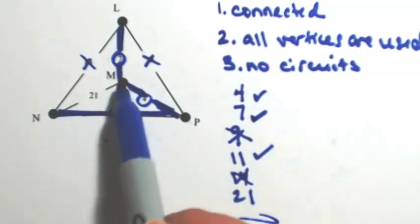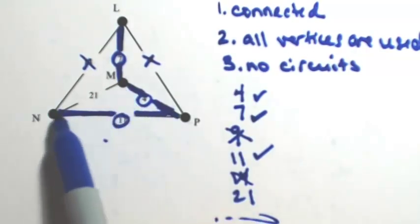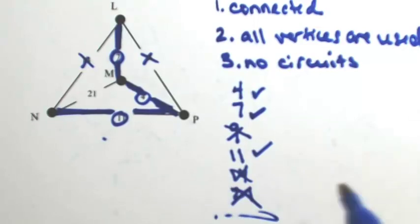If I use 21, that's going to close out a circuit between M, N, and P. So I'm not going to use that one.